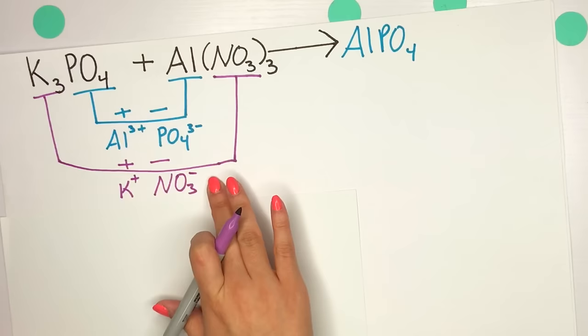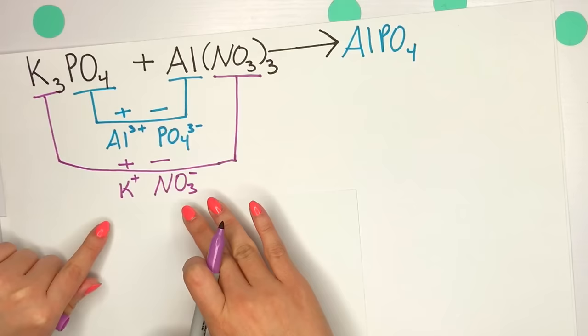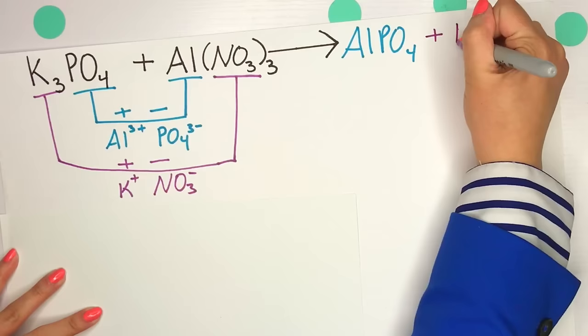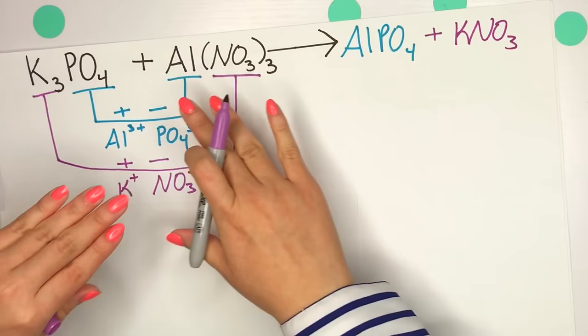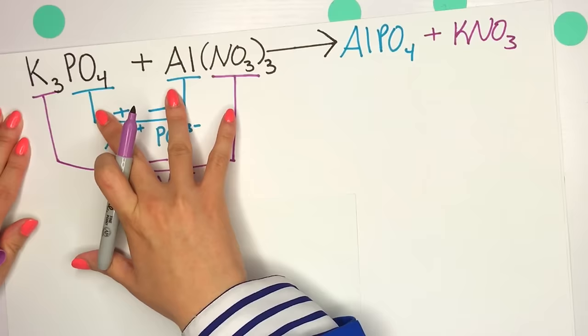Now, continuing with this, our charges are completely balanced, so we will get our next product of potassium nitrate. Note that I have not balanced this out. I'm actually not going to be balancing equations right now, just showing you how to predict products as a whole.